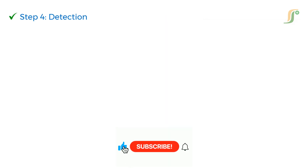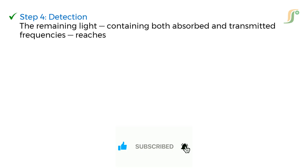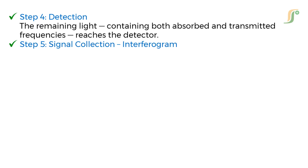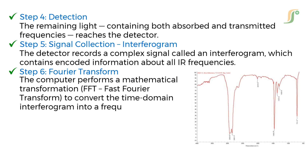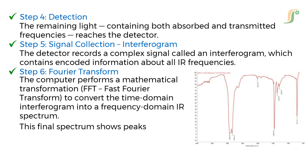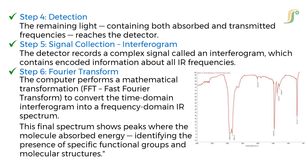Step 4: Detection — the remaining light, containing both absorbed and transmitted frequencies, reaches the detector. Step 5: Signal Collection Interferogram — the detector records a complex signal called an interferogram, which contains encoded information about all IR frequencies. Step 6: Fourier Transform — the computer performs a mathematical transformation, FFT, that is fast Fourier transform, to convert the time domain interferogram into a frequency domain IR spectrum. This final spectrum shows peaks where the molecule absorbed energy, identifying the presence of specific functional groups and molecular structures.